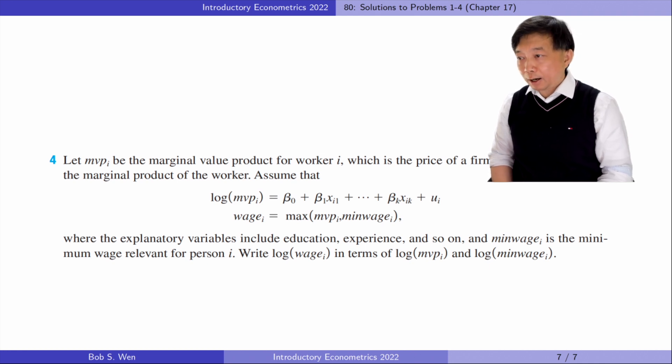The wage for worker i equals her marginal value product when the marginal value product is greater than the relevant minimum wage. Her wage is the minimum wage if the marginal value product is lower than the minimum wage.